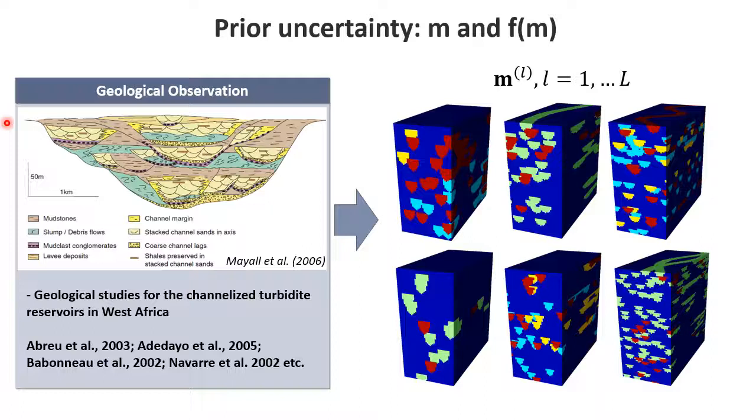As before, when we design uncertainty quantification problems, and we're going through the process of falsification, we have to first define our prior uncertainty. Here, we can rely on substantial literature studies for channelized turbidite reservoirs in West Africa, because this is where the case study is coming from.